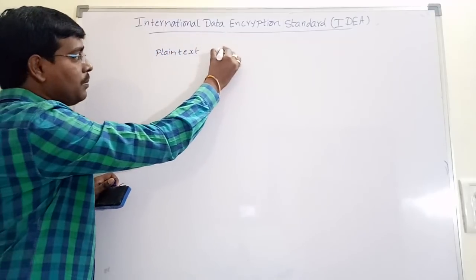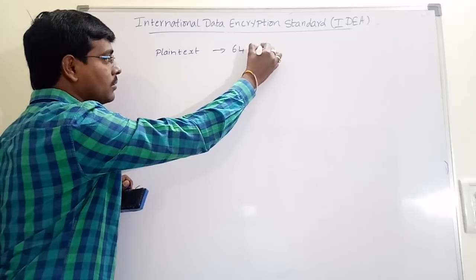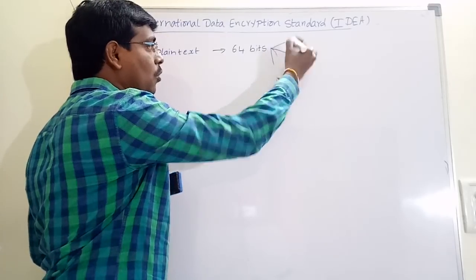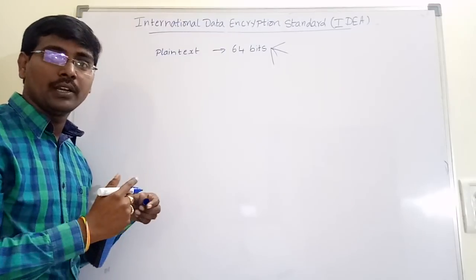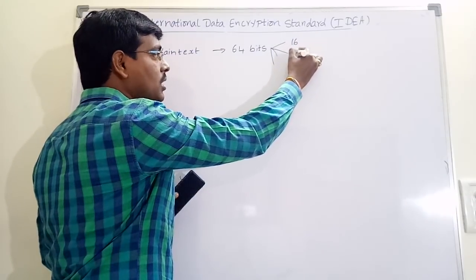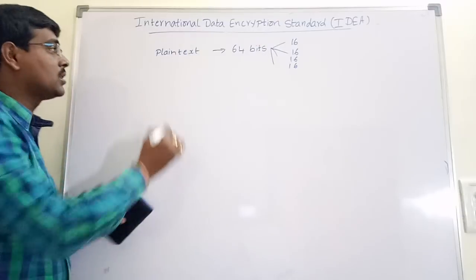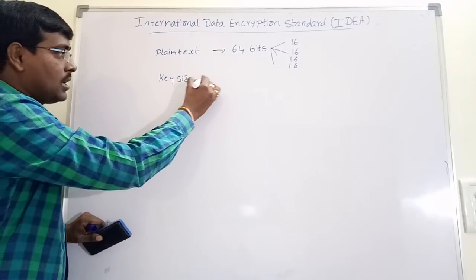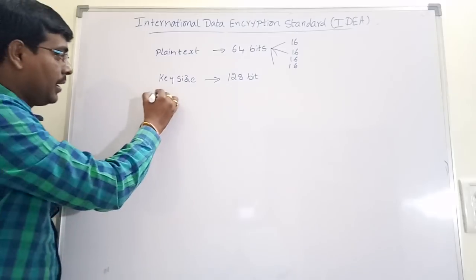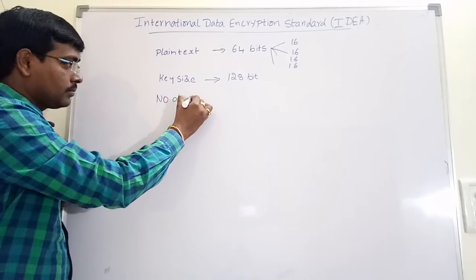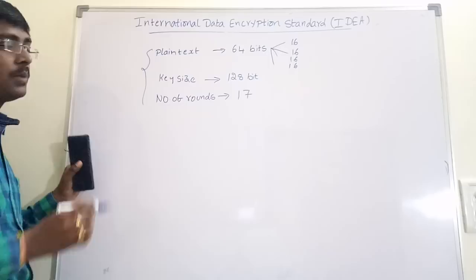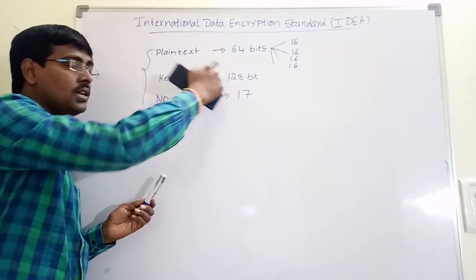Now coming to the IDEA algorithm parameters: the size of the plaintext is 64 bits. These 64 bits are divided into 4 blocks, so the size of each block is 16 bits. The key size is 128 bits. And the number of rounds are 17 — these are the predefined functions.